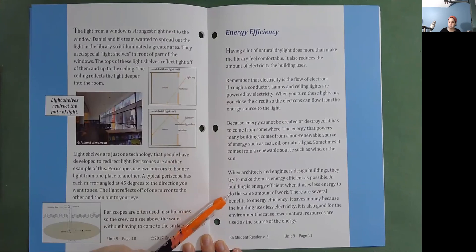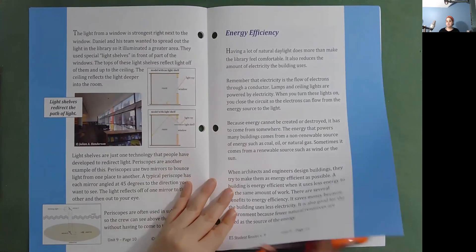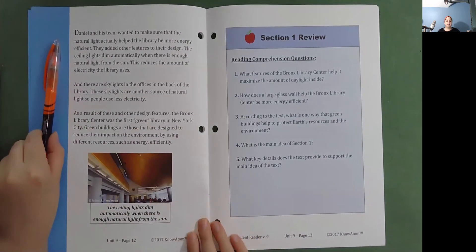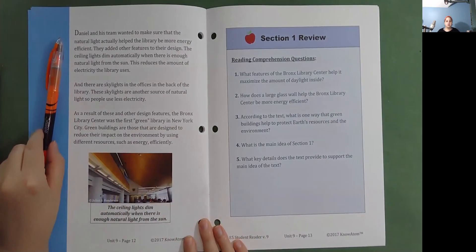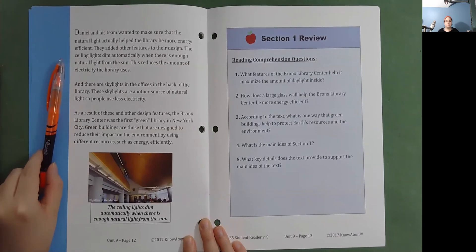Daniel and his team wanted to make sure the natural light actually helped the library be more energy efficient. They added other features to their design. The ceiling lights dim automatically when there was enough natural light from the sun. This reduces the amount of electricity the library uses.